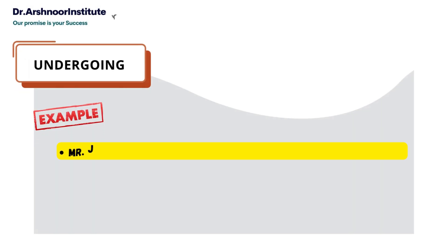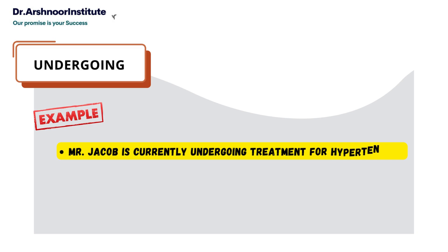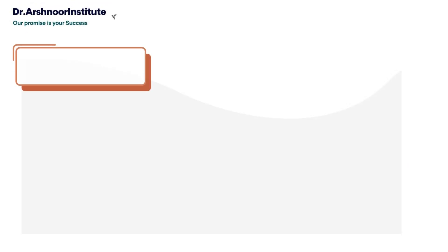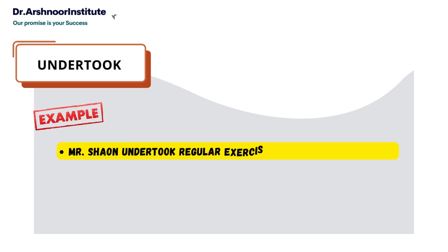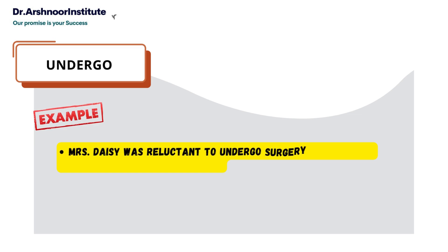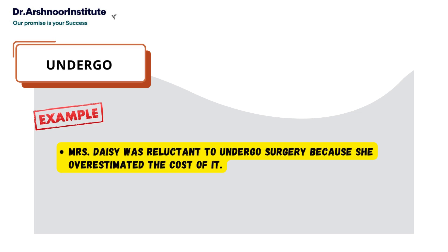First is 'undergoing' and here is an example: Mr. Jacob is currently undergoing treatment for hypertension. Next is 'undertook': Mr. Sean undertook regular exercises to reduce her weight. Then 'undergo': Mrs. Daisy was reluctant to undergo surgery because she overestimated the cost of it.